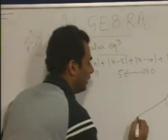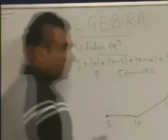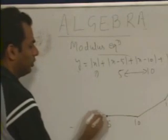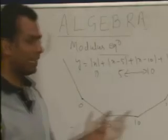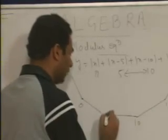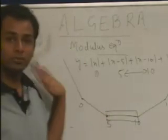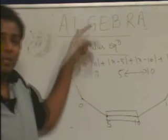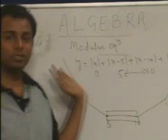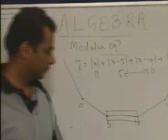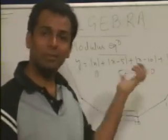Between 10 to 5 it is always a straight line, then 5 to 0 it is like this one, and from 0 onwards like this one. So of course we can say the minimum value has to be lying between 5 and 10, which we have discussed. Just compare with the previous one when there were only two terms. This is the case when the number of terms is even.